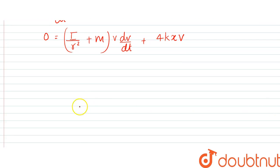So now we have to find the time period. From here, dv by dt is equal to acceleration which is minus 4kx by (I by r square plus m).